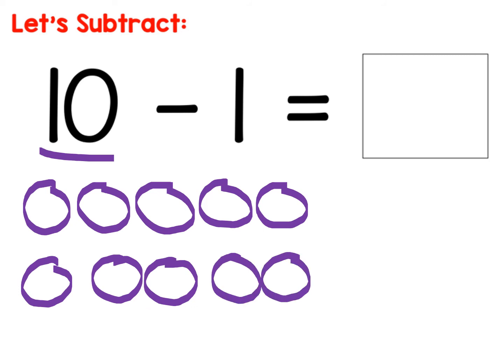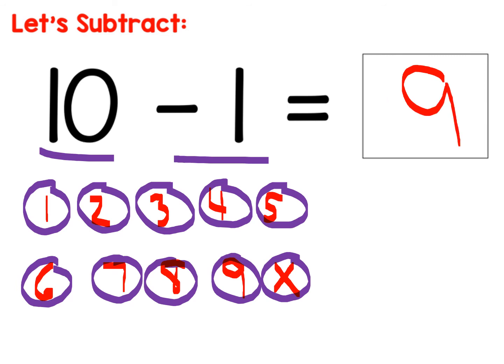Now I'm gonna cross out however many it says to minus. It says minus one, so I'm gonna put an X on one. And then I'm gonna look at how many I have left. I have one, two, three, four, five, six, seven, eight, nine. Nine left. Nine is the difference.